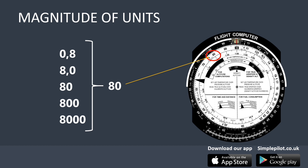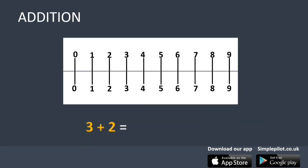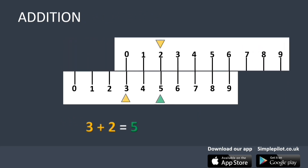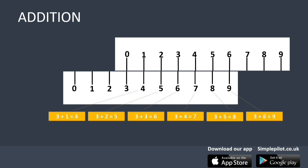To understand the rationale behind the flight computer, let's focus on the next section. Imagine that you had to add two numbers but had never learned how to do arithmetic. One way of doing this would be to use two rulers. Suppose you had to add 3 and 2: align 0 on the top ruler with 3 on the bottom ruler, then look down from 2 on the top ruler and read off the answer, which is 5. By just this one alignment, you can also read off the sum of 3 plus any other number. You can also subtract using a similar system. Suppose you want to subtract 1 from 4.